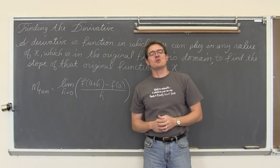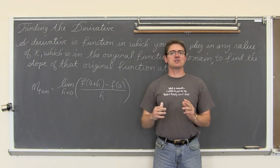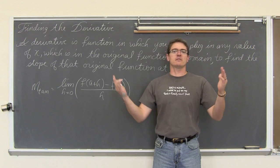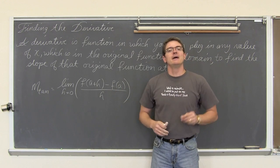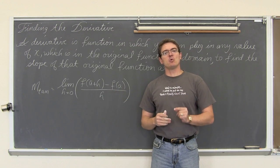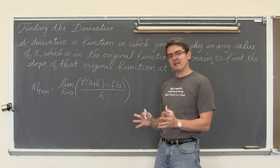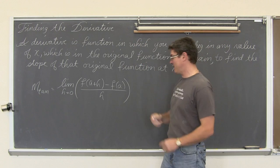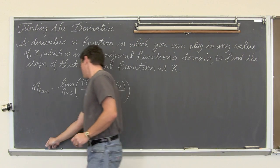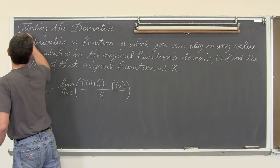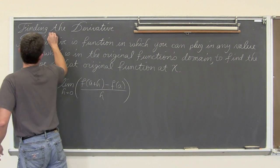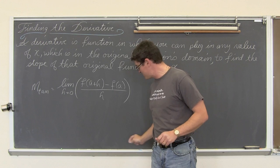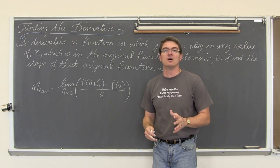We just got done finding slopes of curved functions, curved lines, curved graphs, whatever you want to call them, at a particular point. Now what we want to do is expand that just a little bit and actually find some derivatives. We are going to do two examples. We are going to use the same two functions that we used in my previous video.